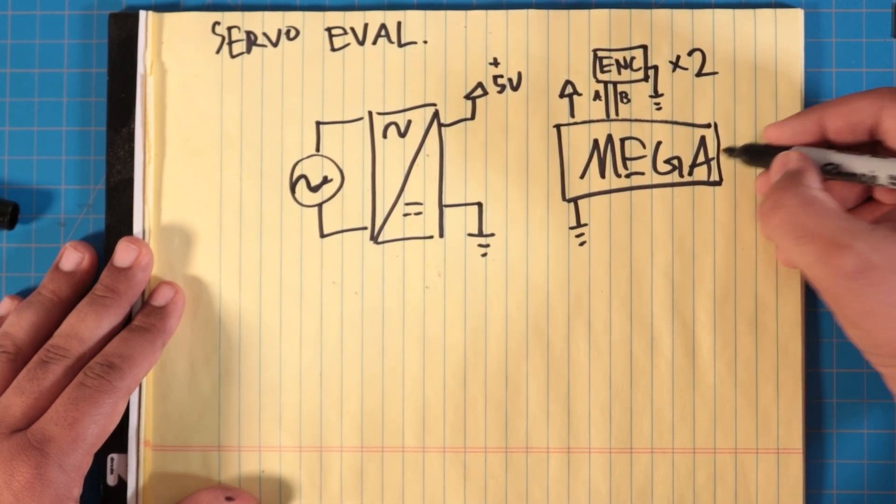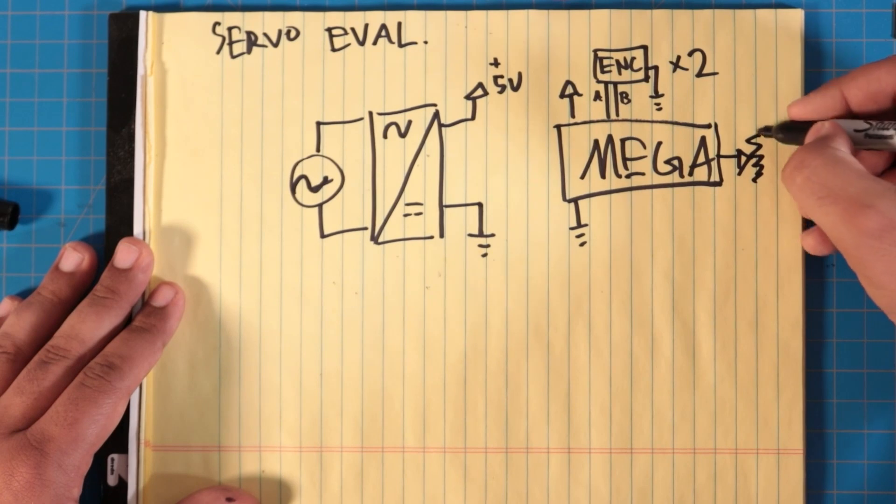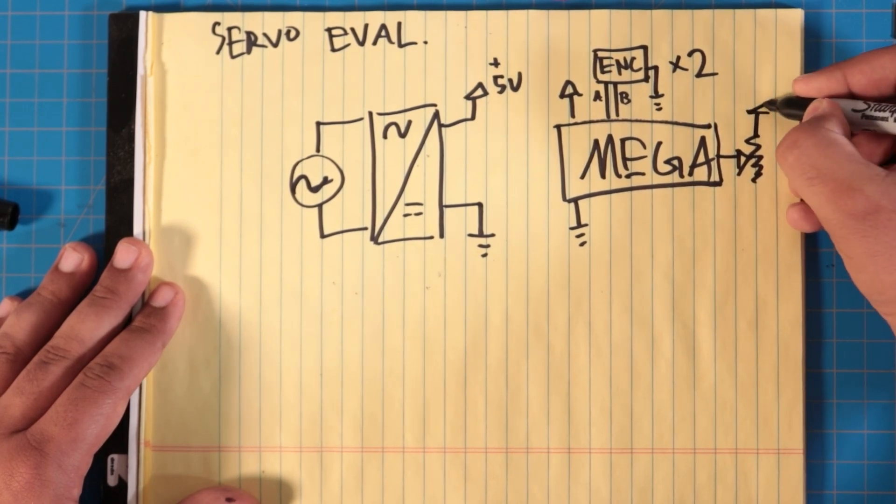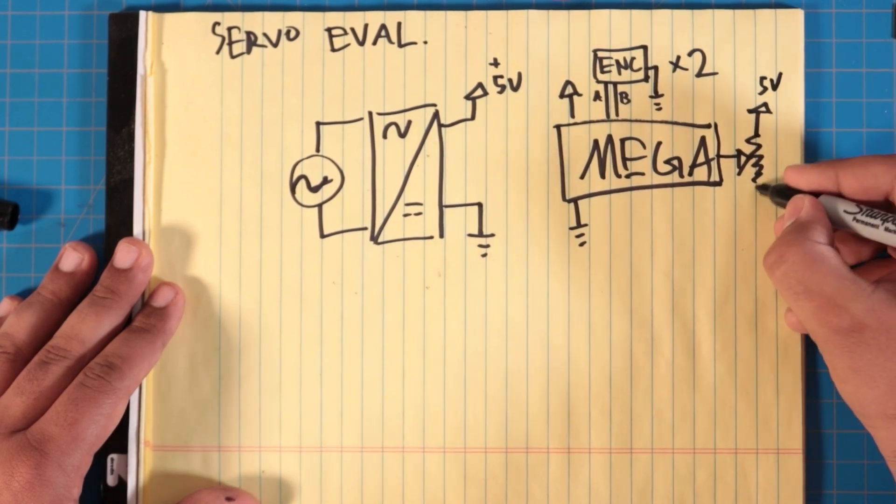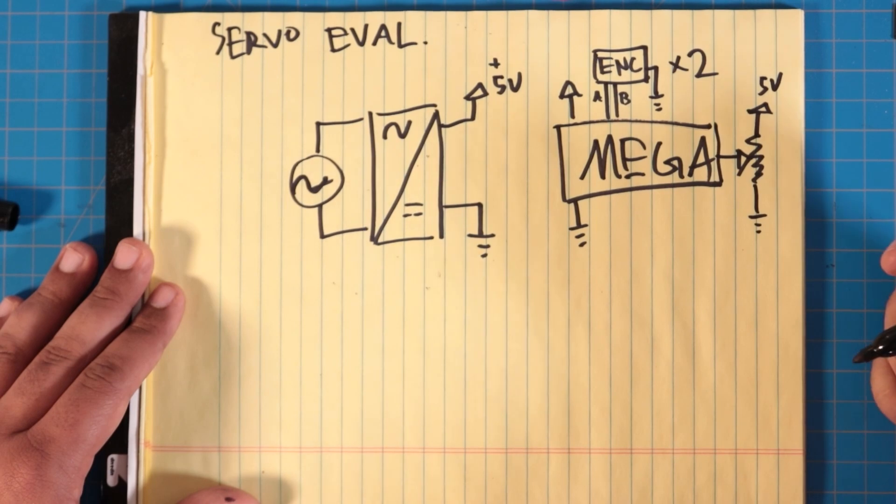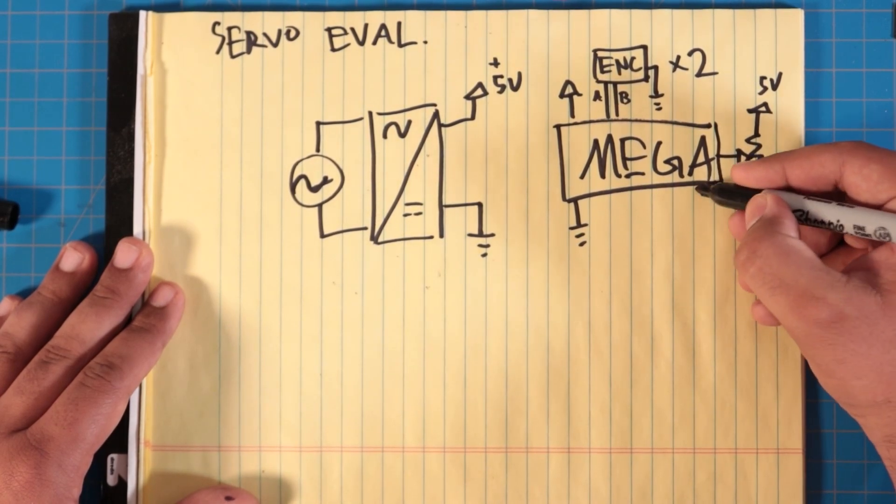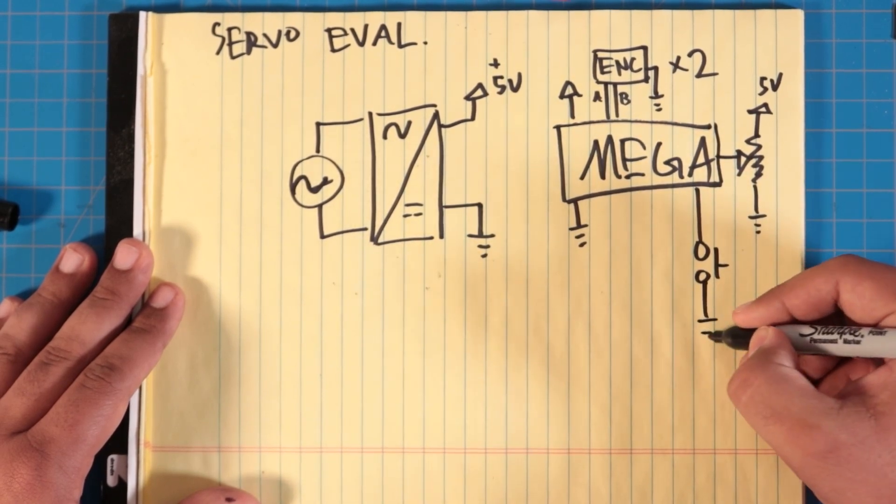We will have a potentiometer. That's pretty—I'm pretty sure that's how they're drawn. So this will go up to 5 volts again, and this will go down to ground. And we'll also have our buttons. Button 1. To ground.